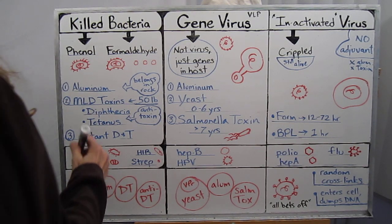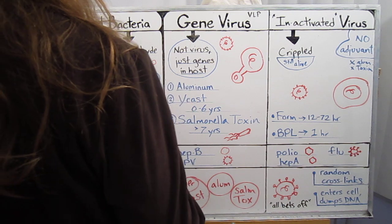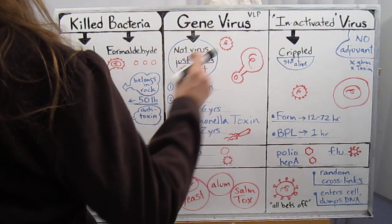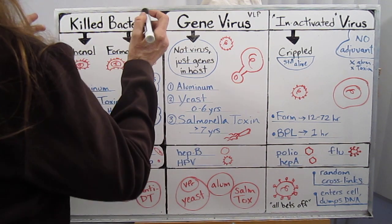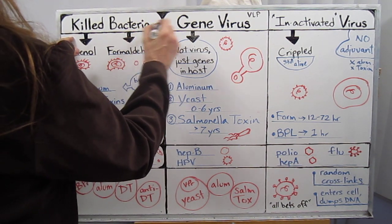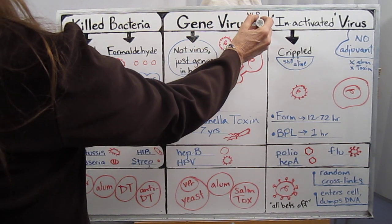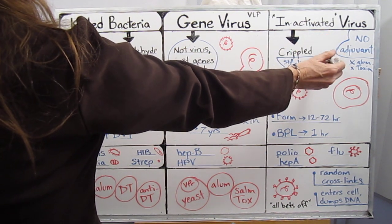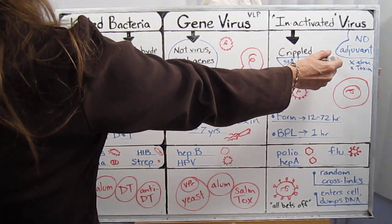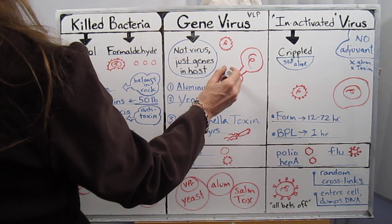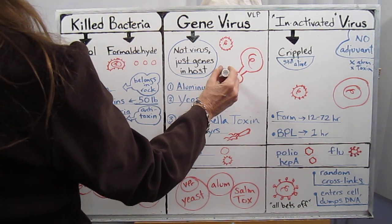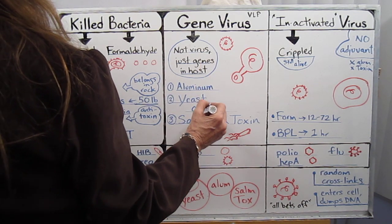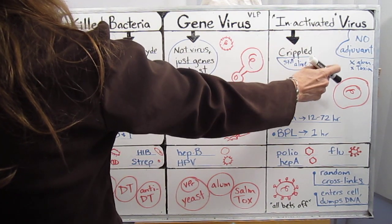This is a breakdown of the dead microbe vaccines. There's the dead bacteria and the dead virus — that's the simplification. In the breakdown, you have killed bacteria, you have the gene viruses or the virus-like particles, and then you have the inactivated virus, which is merely crippled. Both the killed and the gene virus vaccines need adjuvants — very strong adjuvants — and the inactivated virus doesn't need any.